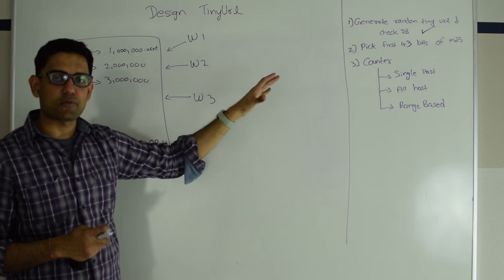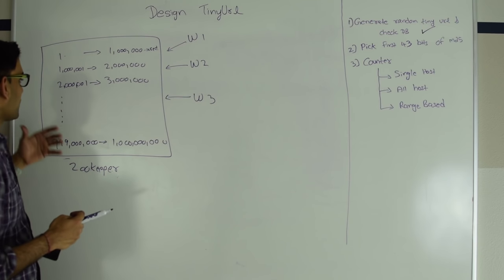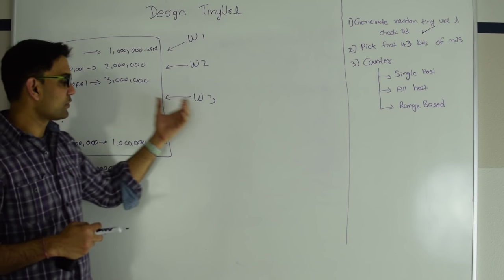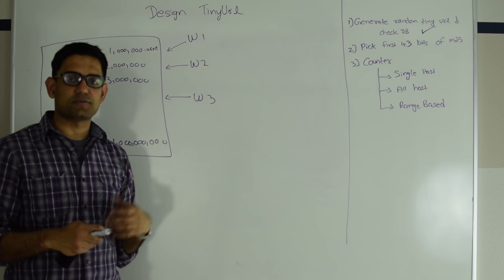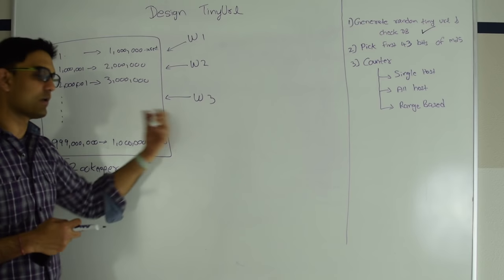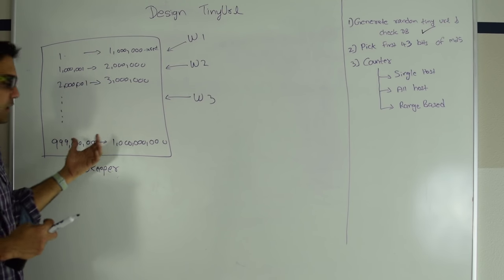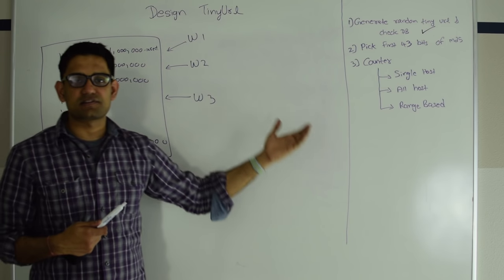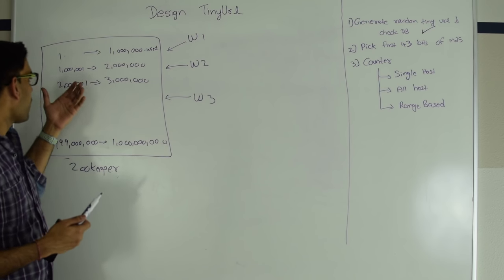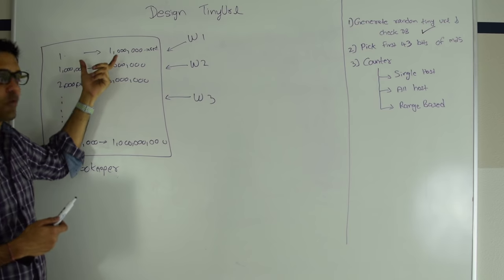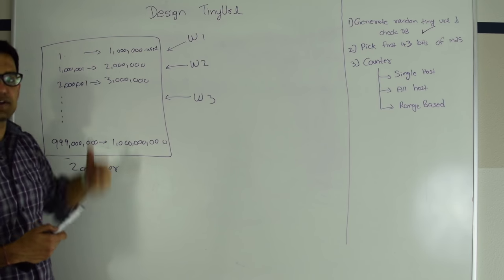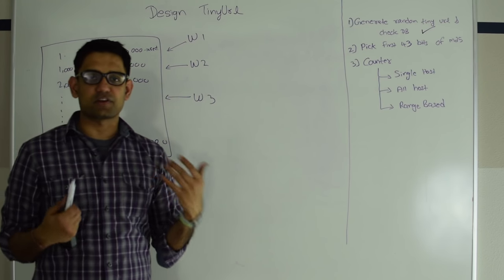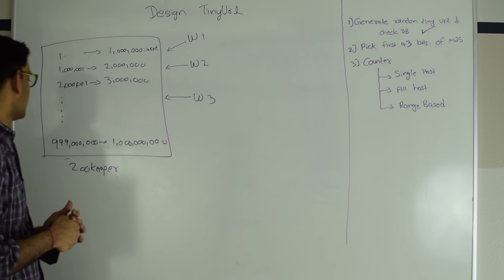Any time a worker exhausts its range, it comes back to Zookeeper and requests a new unused range. The best thing here is that you can add new worker threads without worrying — a new worker just comes in and asks Zookeeper for a new unused range. If a worker thread dies in the middle, we only lose the unused combinations in that range. Since in the worst case we lose about a million combinations, it's not a big deal given we have up to 3.5 trillion total combinations.